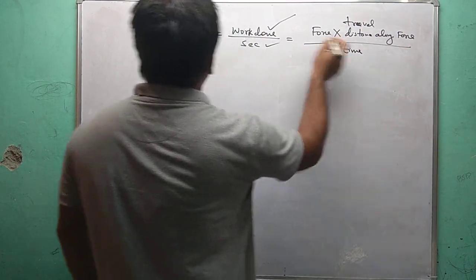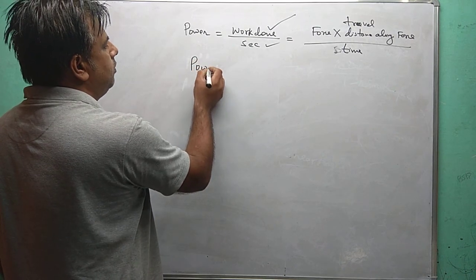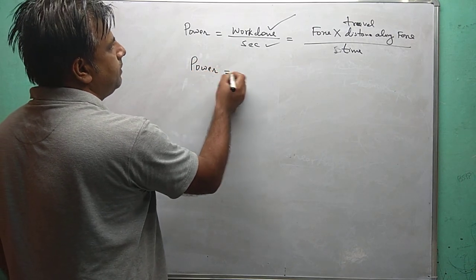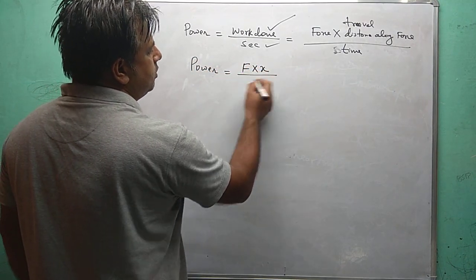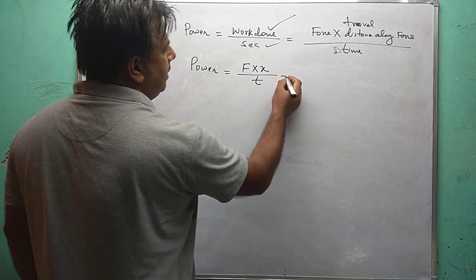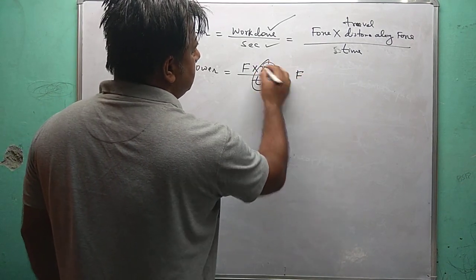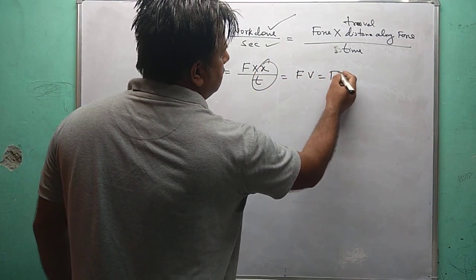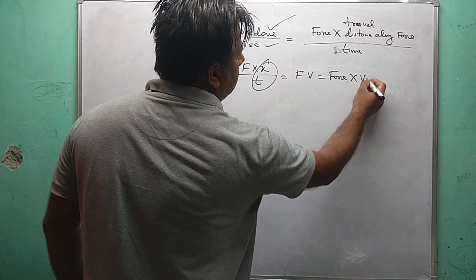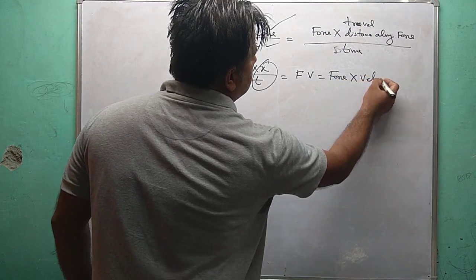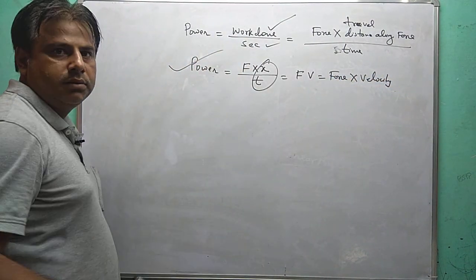So you may write power as force into travel distance over time, which gives force multiplied by velocity. So force multiplied by velocity will give you the power.